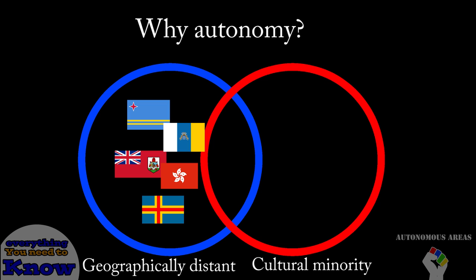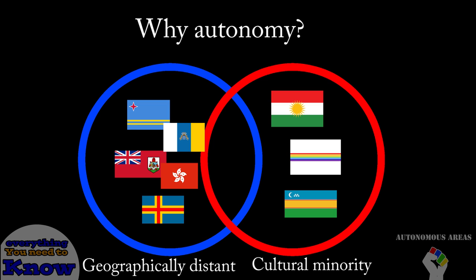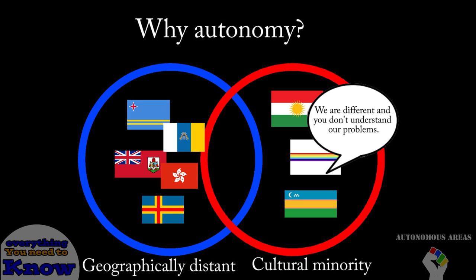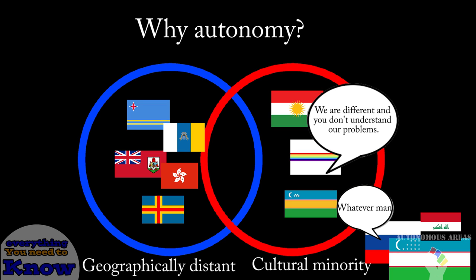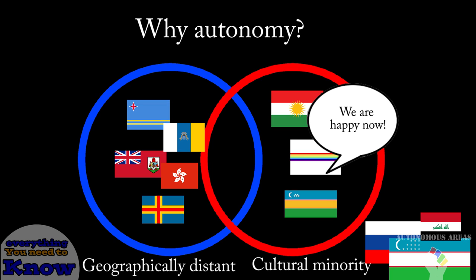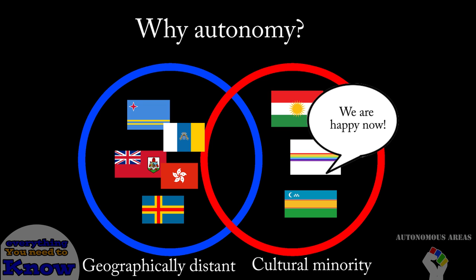But what about cultural minorities? In these circumstances, an area inhabited by a regional minority will want to govern themselves because, unsurprisingly, their sovereign government does not understand their beliefs, desires, and ambitions as well as they do. Giving autonomy to these groups of people can stabilize that region and help avoid an independence movement, which is not a good thing for a sovereign country.